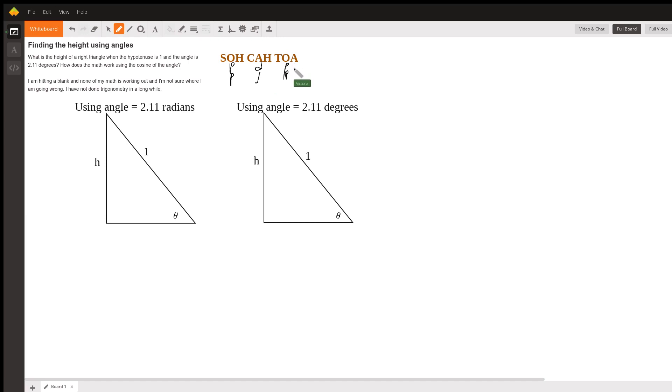If we're looking for the height and this is our angle, the opposite is the height and the hypotenuse is one. So the thing that we really want to set up is sine of theta.